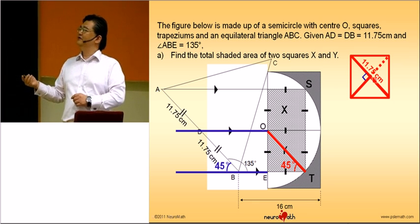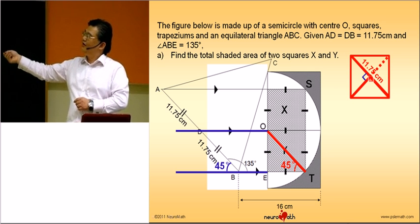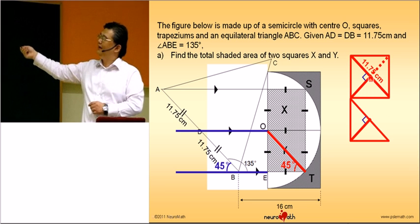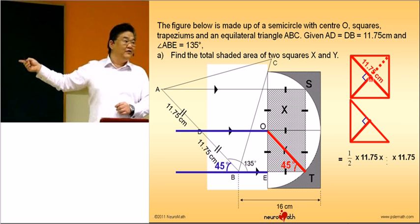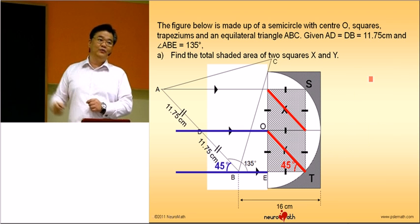So, to find the area of this triangle, it will be half times base. Base will be on this one. And your height is actually half of your base. That's why the area of a triangle is this. So, to find the area of X and Y, square X and Y,